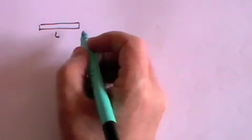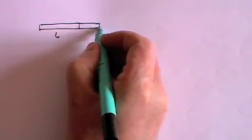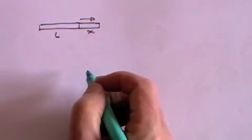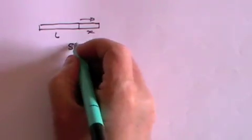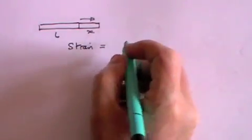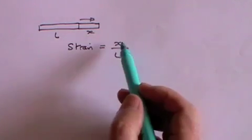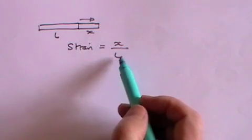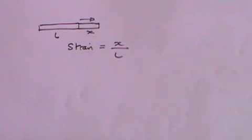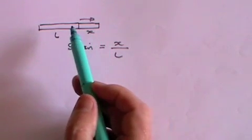Tensile strain, or strain, is the change in length compared to the original length. If you have a wire of length L and you extend it by a distance x by applying a force, then the tensile strain equals the extension divided by the original length. Strain has no units because it is length divided by length, giving just a dimensionless number. Stress and strain can be measured whether you are extending a piece of wire or compressing a spring.